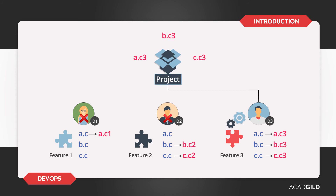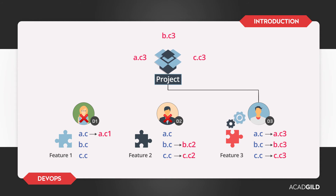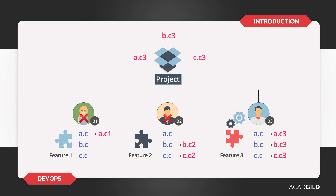Developer 2 is pretty angry because his changes are lost. This is just maybe a one-day event. If this happens every day, then you don't know who is working on what, what changes are going in, what is the history of changes, who made the changes, and why they made the changes. Hence, these problems can be solved by implementing version control systems.